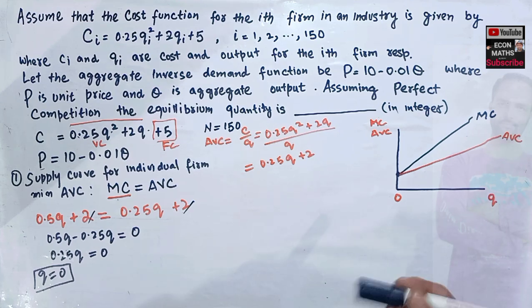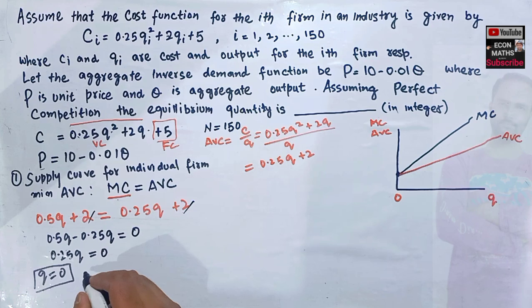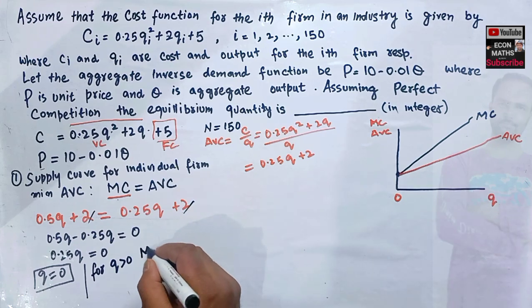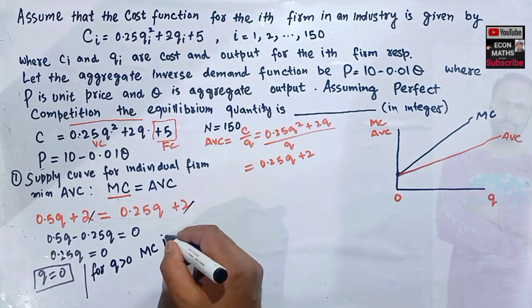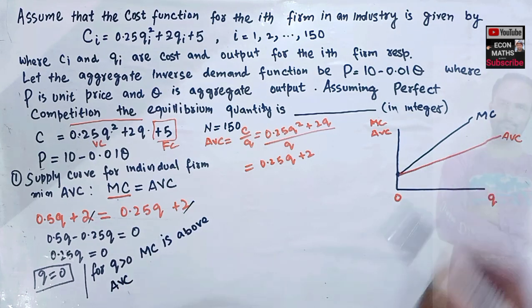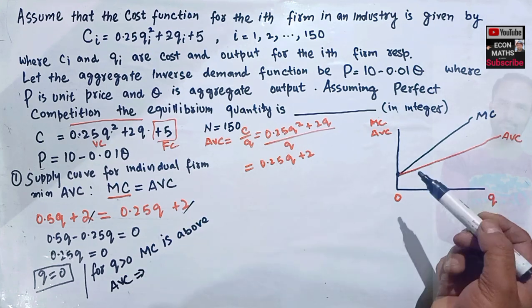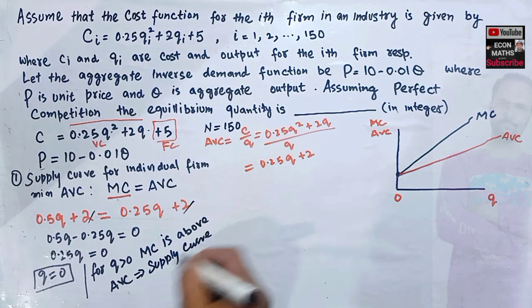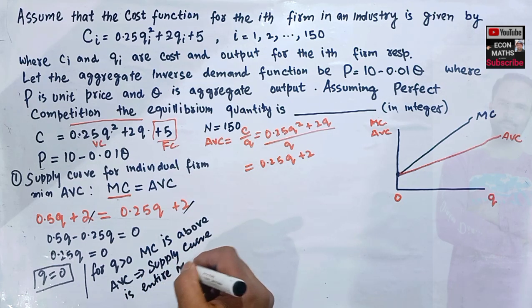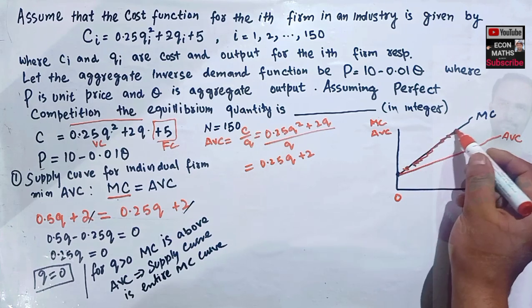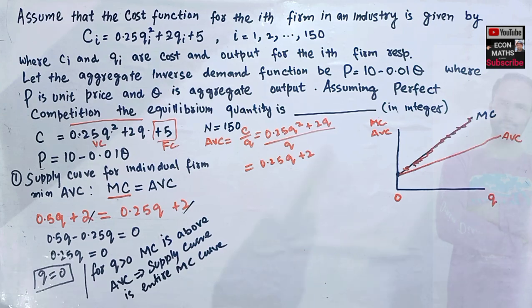This means the supply function for an individual firm is the entire marginal cost curve, because for any q greater than 0, the MC is above the AVC. So the entire MC curve serves as the individual firm's supply curve.